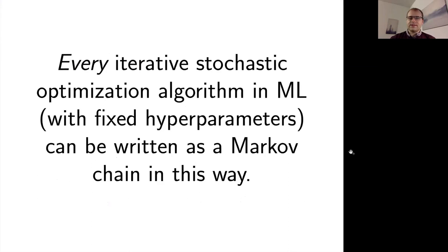You can do this for any stochastic optimization you come across in deep learning literature. We claim that every iterative stochastic optimization algorithm in ML — once you fix the hyperparameters — can be written as a Markov chain in this way. That includes Adam, second-order methods, and any others, because all of them are based on fixed-point iteration and will typically have finite memory to be computationally efficient.